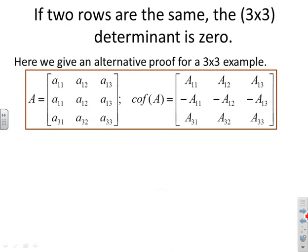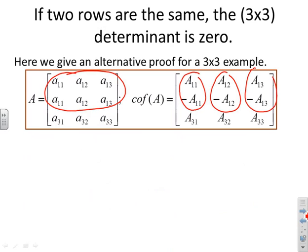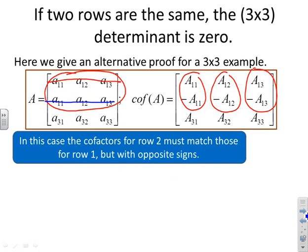An alternative proof uses rows one and two. The key observation is that the cofactors for rows one and two must be the same but with a sign change — crossing out row one versus crossing out row two gives the same minor, but the sign matrix assigns a minus to one and a plus to the other. Writing out the expansion along row one and then along row two makes this explicit.